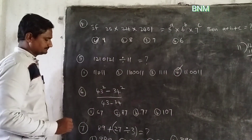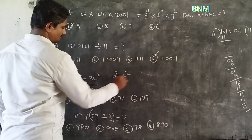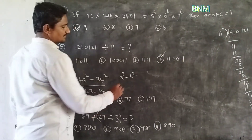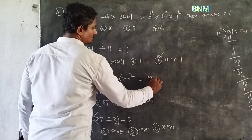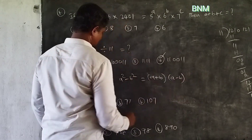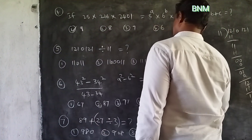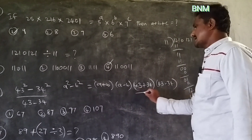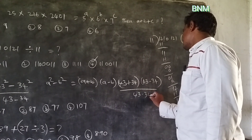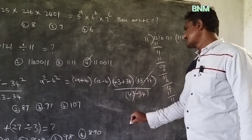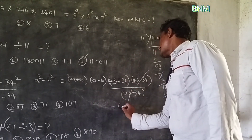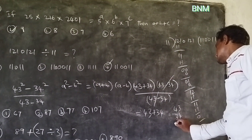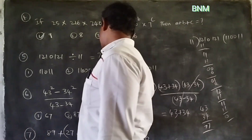Next, sixth problem. This is a squared minus b squared. 43 squared minus 34 squared divided by 43 minus 34. Using the identity: a squared minus b squared equals (a plus b)(a minus b). So (43 plus 34)(43 minus 34) divided by (43 minus 34) — cancel the (43 minus 34). You just add them: 43 plus 34 equals 77. Third option is the right answer.